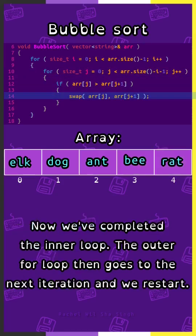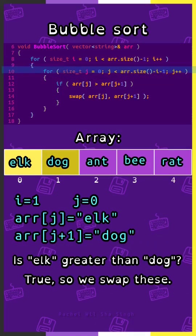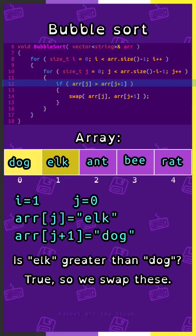So we swap these. Now we've completed the inner loop. The outer for loop then goes to the next iteration and we restart. i is 1 and j is 0. Array sub j is elk, array sub j plus 1 is dog. Is elk greater than dog? True, so we swap these.